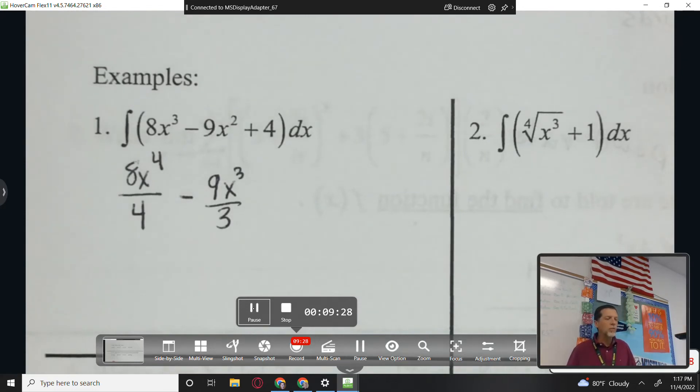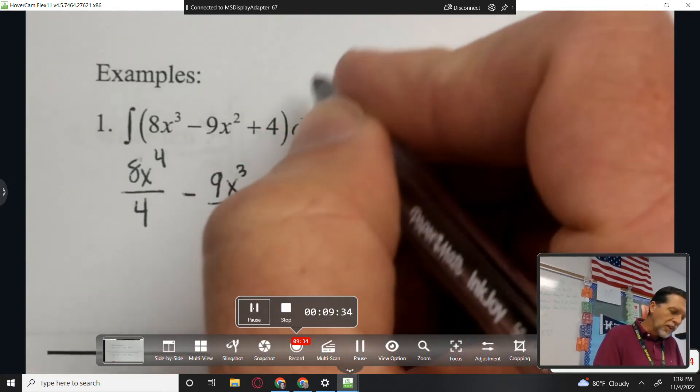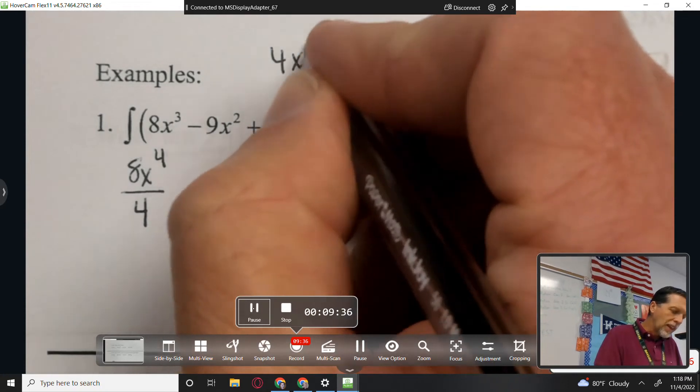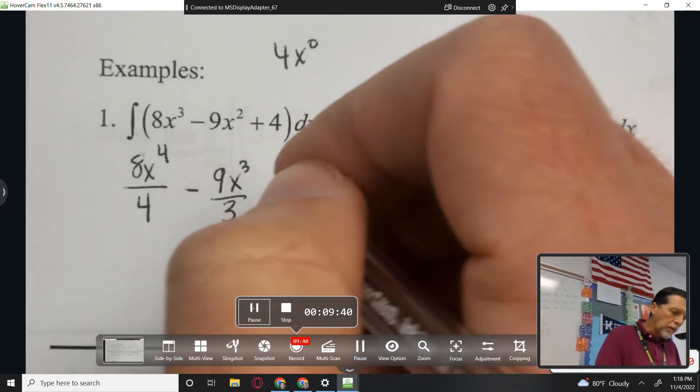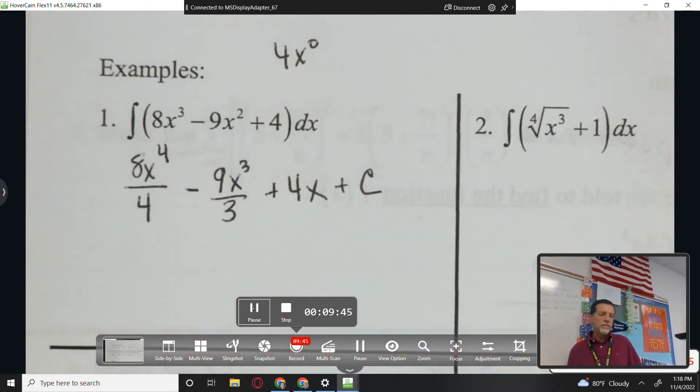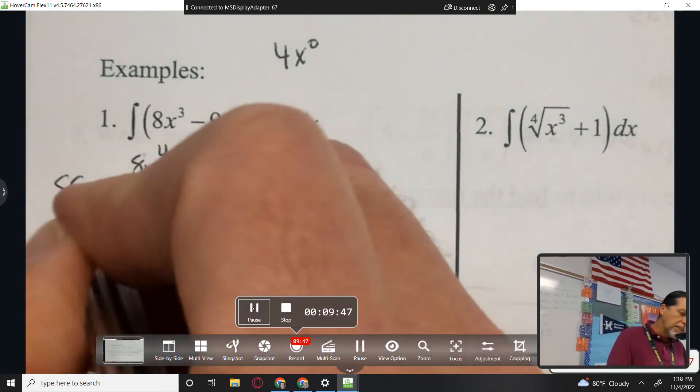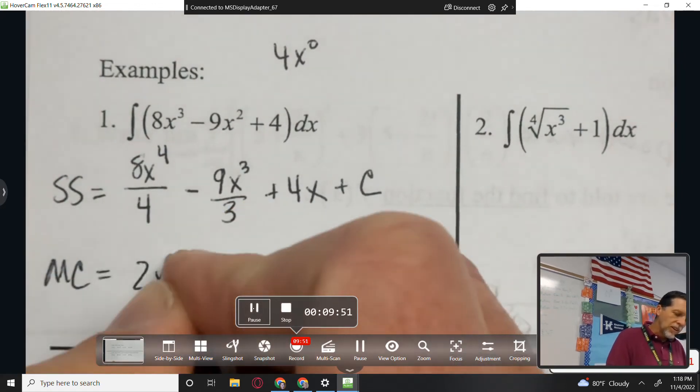What about that last one? What function has a derivative of 4? 4x plus c. And most people just figure that out, but you can think of that as 4x to the zero. Increase the power by one, you get 4x, and then plus c. And that's a perfectly good safe stop answer. But a multiple choice answer is going to do the simplifying.